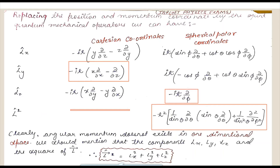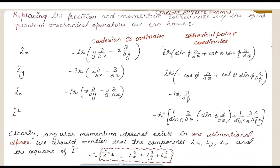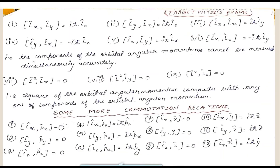Clearly, the angular momentum does not exist in one-dimensional space. In Cartesian coordinates, we can write L² = Lx² + Ly² + Lz². Now let's look at the commutation relations related to this — there are some very important commutation relations, and I have an easy trick to remember them.